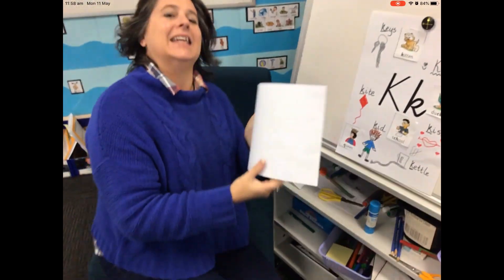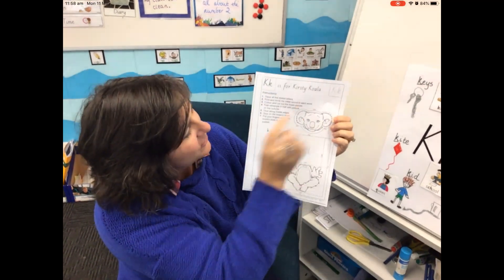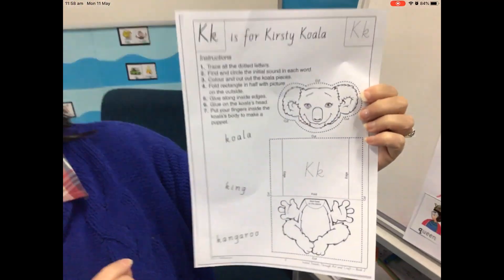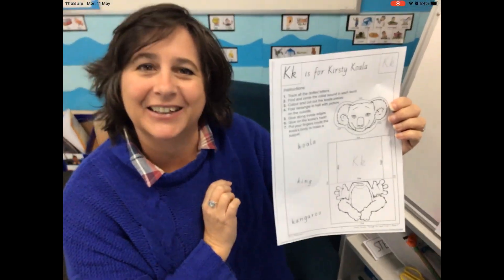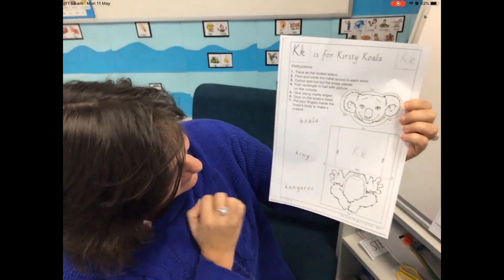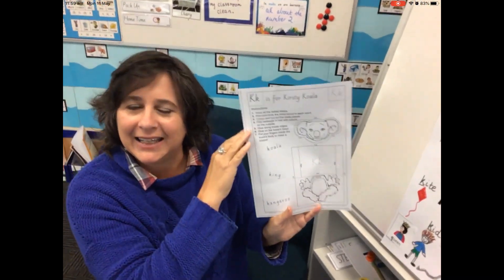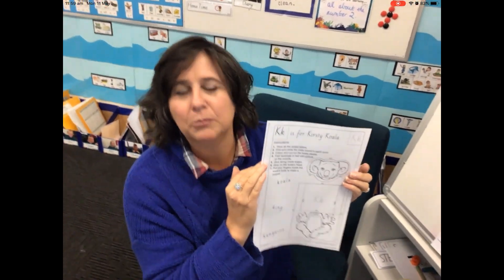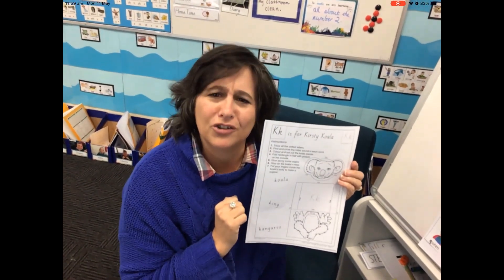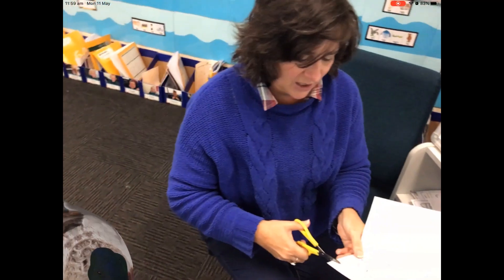Now we might go over and see what crafty activity we have today. Here we go — it is Kirstie the Koala! There's the case for Kirstie the Koala. She looks a little bit disembodied at the moment, but that's okay — we're going to make it look good. You have to find all the K's, trace over the K, and colour in the koala any colour you like. Koalas are technically grey, but it's your creation, so do whatever you like! The first thing is to cut around the edge.